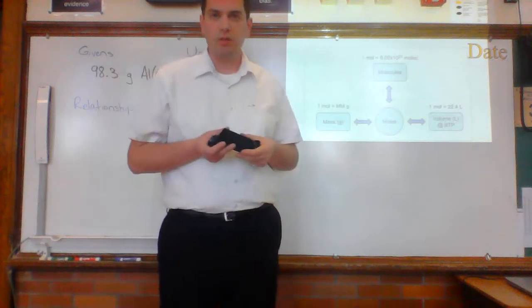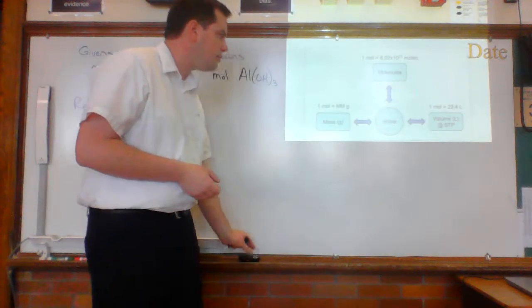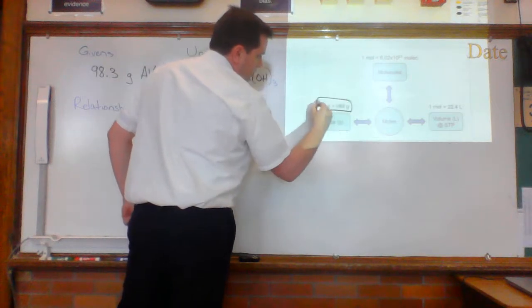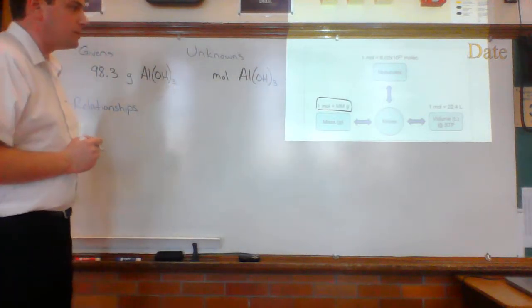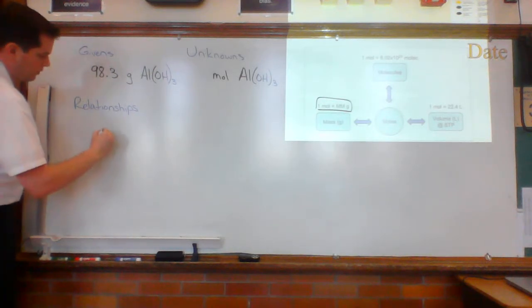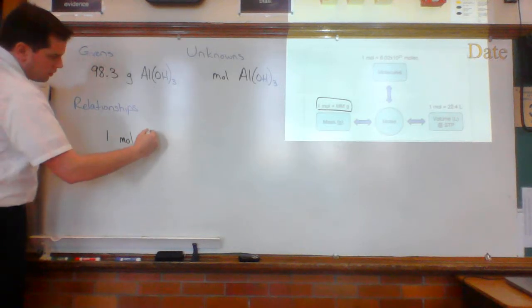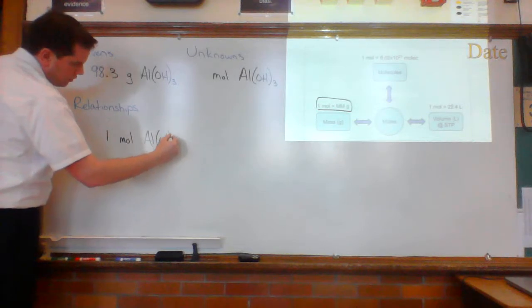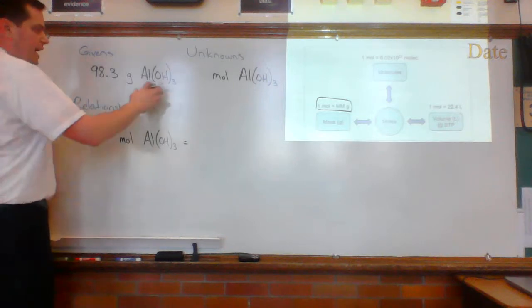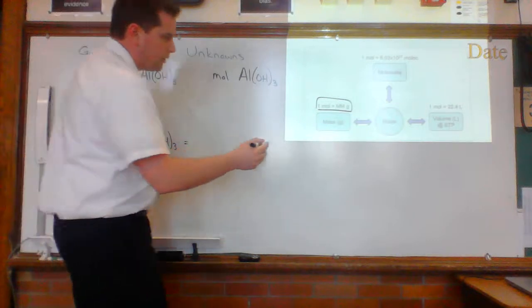Now, in chemistry, relationships means mathematical equation. So the mathematical equation that I'm going to use here is one mole equals the molar mass in grams. For my relationship part of the Guster, I'm going to use one mole Al(OH)3 equals, and I need the molar mass. I've got to do a side calculation for aluminum hydroxide. Let's do that over here really quick.